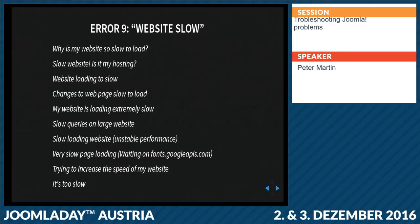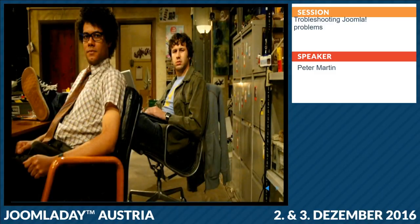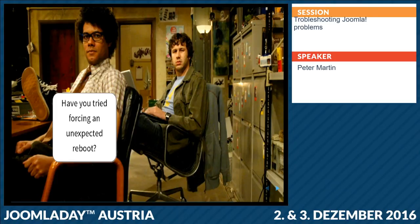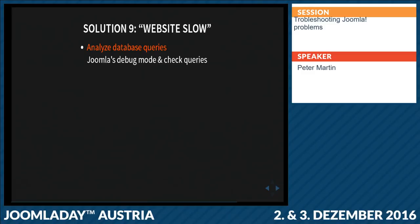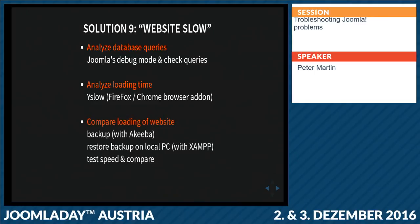Problem nine: slow website. Analyze your database queries — switch on Joomla's debug mode and check the queries. Also use YSlow, a browser add-on for Firefox or Chrome that shows all the bottlenecks in the website. You could also compare your website on the server with your website on a local machine: create a backup using Akeeba, restore it with kickstart.php locally. If it's faster locally, it might be a server problem.